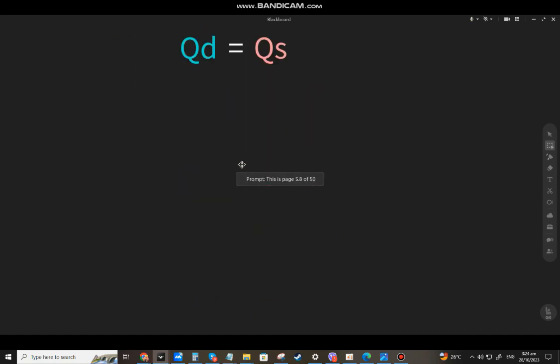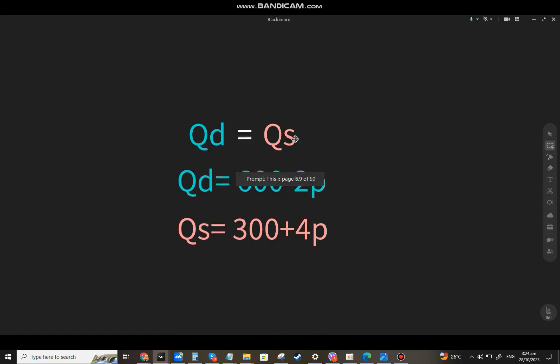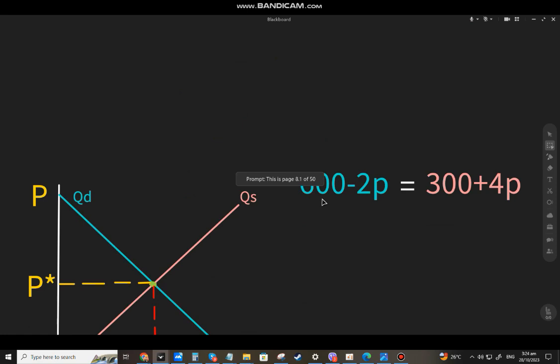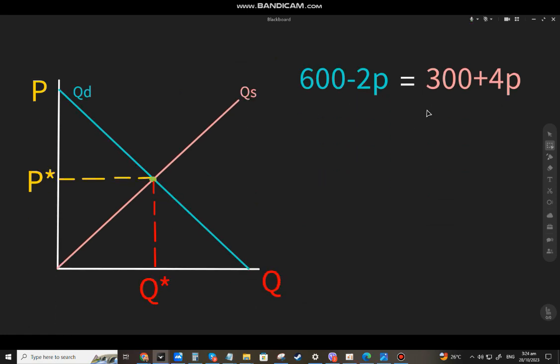To find the equilibrium, set Qd equal to Qs. So 600 minus 2p equals 300 plus 4p. Using basic algebra, move 300 to the left side: that's 600 minus 300 equals 2p plus 4p, which gives us 300 equals 6p. Therefore, P equals 300 divided by 6, which is 50.